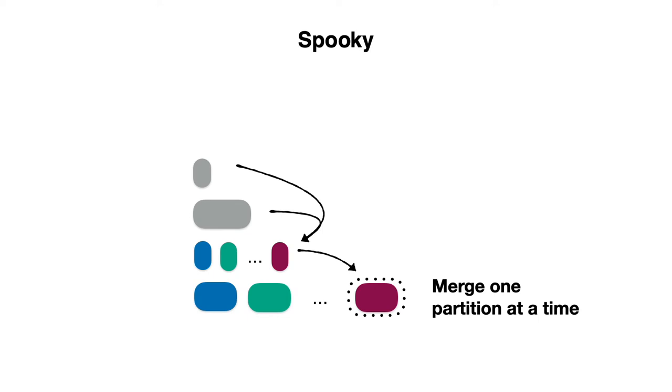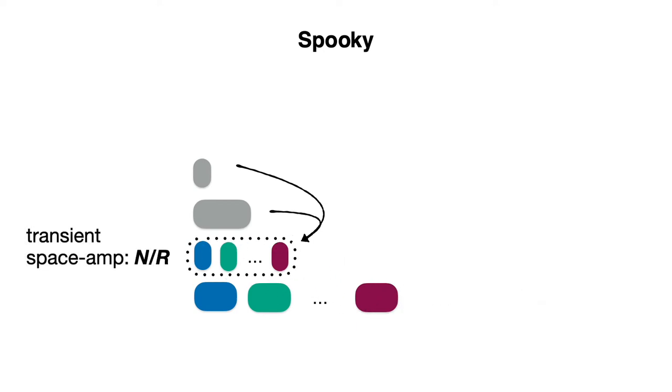One shortcoming so far is that performing a full merge operation into the second largest level still involves significant transient space amplification. The additional space needed is equivalent to the capacity of this level, which is n over r, where n is the data size and r is the fanout.